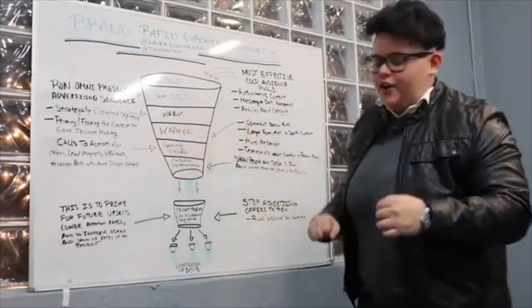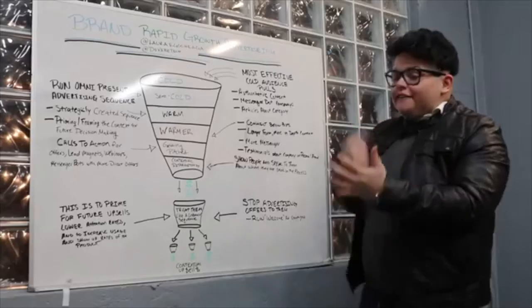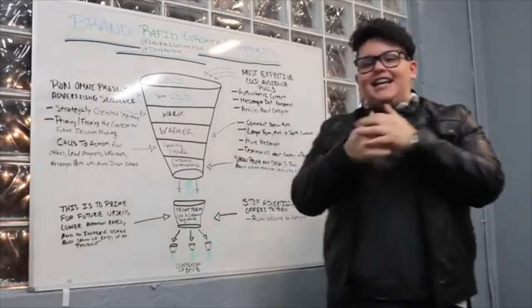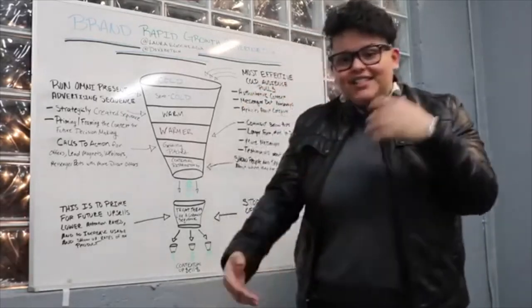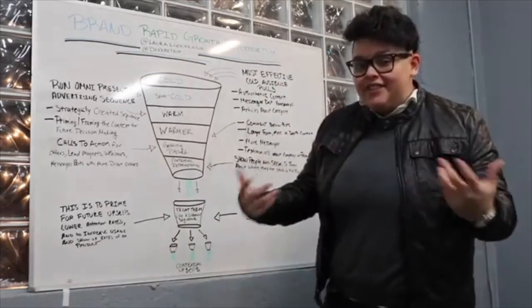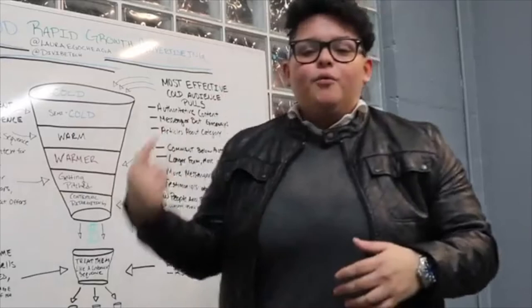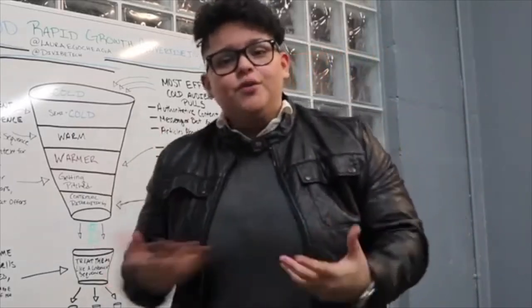Once they're in the warmer section of the funnel, that's a point where you want to make sure you're commenting below the post. You're looking for longer form content, more in-depth content. Definitely want to be using more messenger and getting them into deep messenger sequences to get used to your brand, who you are, what you stand for. And of course, giving them value. And also at this point, you want to be using testimonials. You want to be hitting them with testimonials about what people are saying about you and your brand.